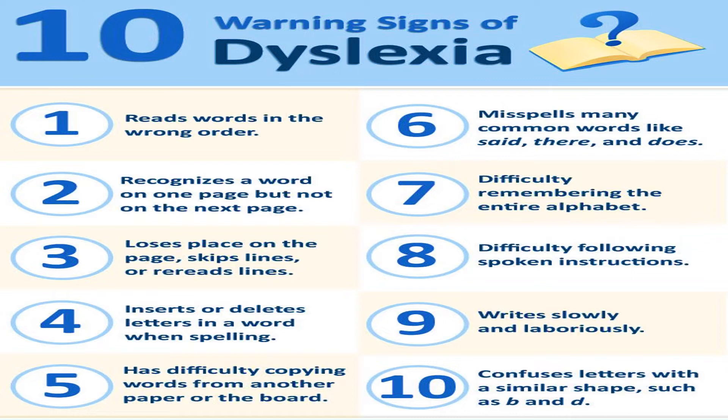Number eight: difficulty following spoken or multiple instructions — this was also mentioned in a previous video. Number nine: writes slowly and laboriously, unable to write in a smooth manner like other children. Number ten: confuses letters with a similar shape, for example b, d, and p. These are the 10 warning signs to look for if your child is not getting words correctly.